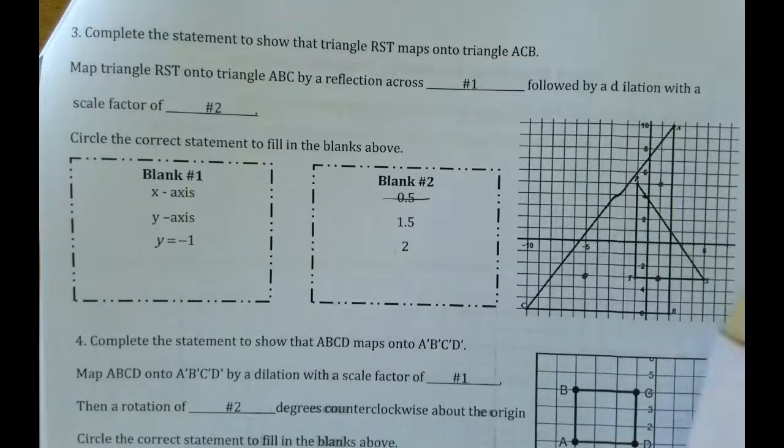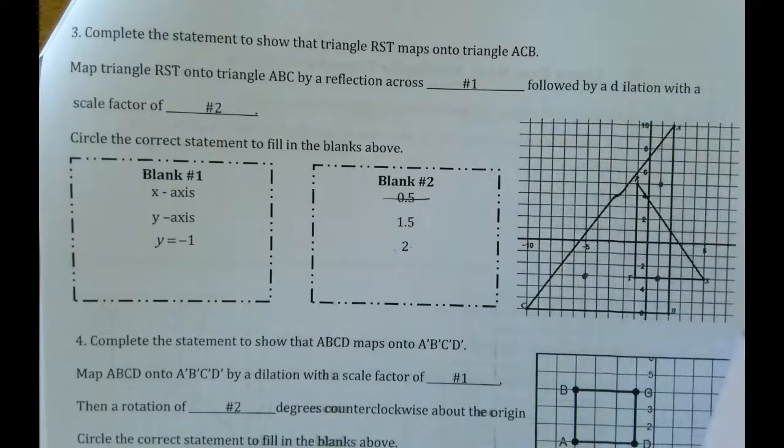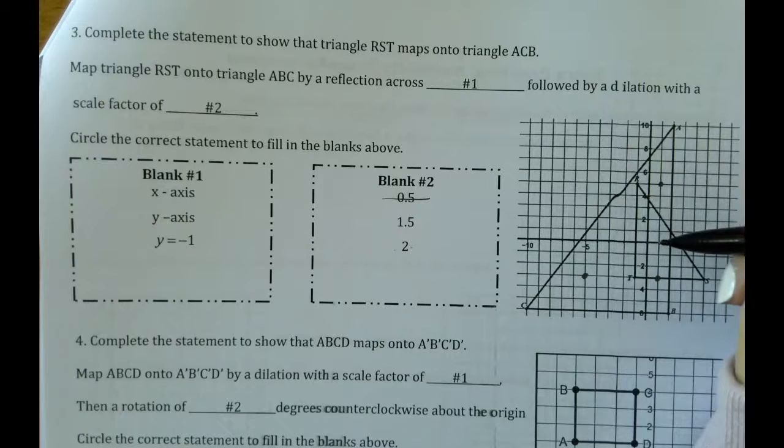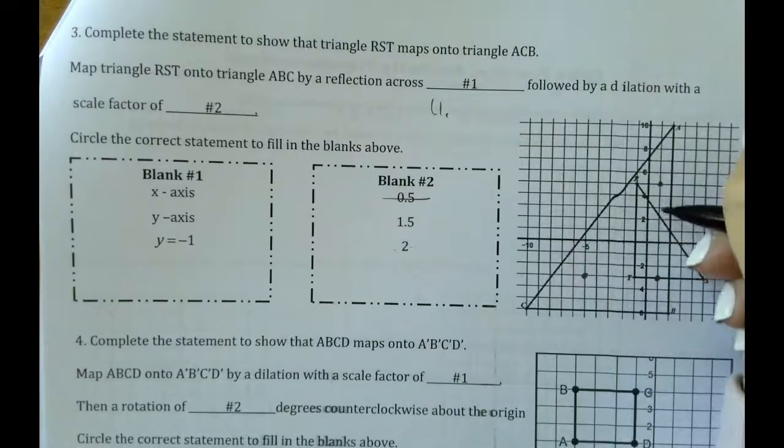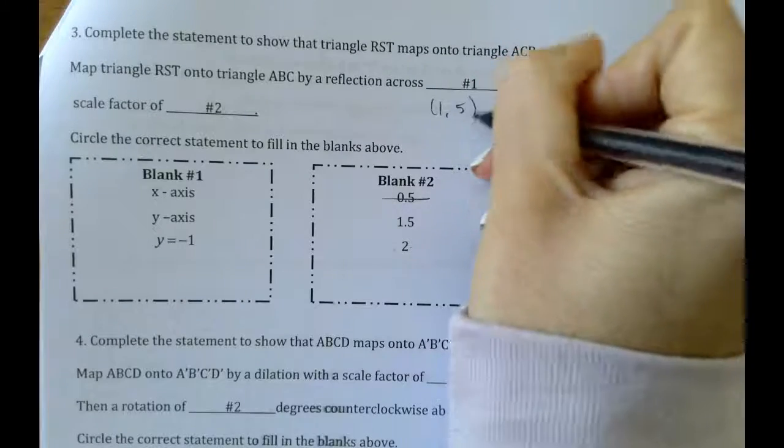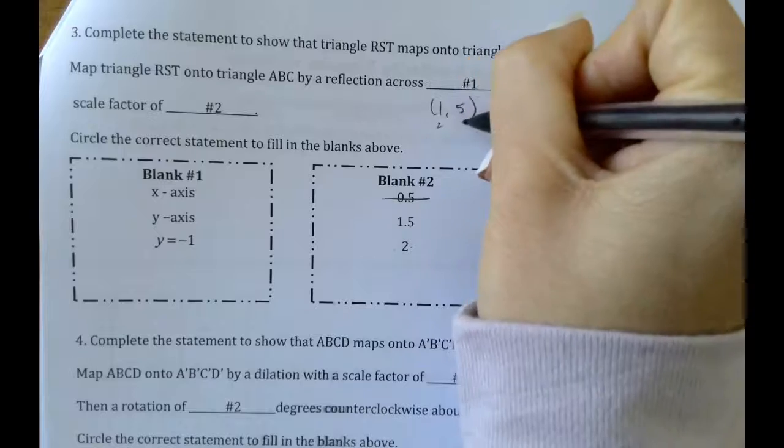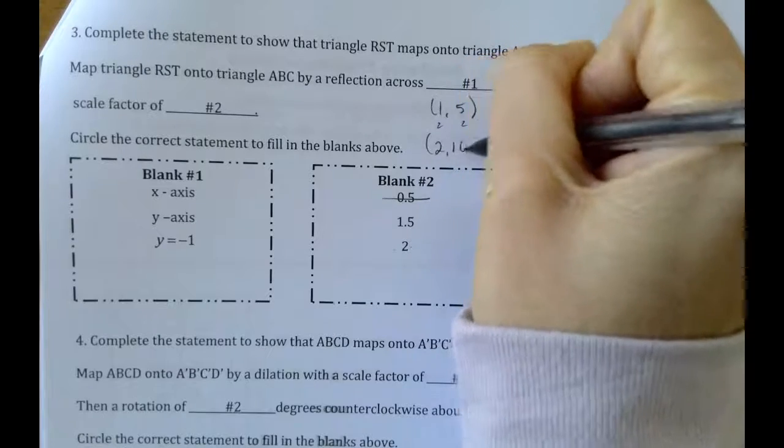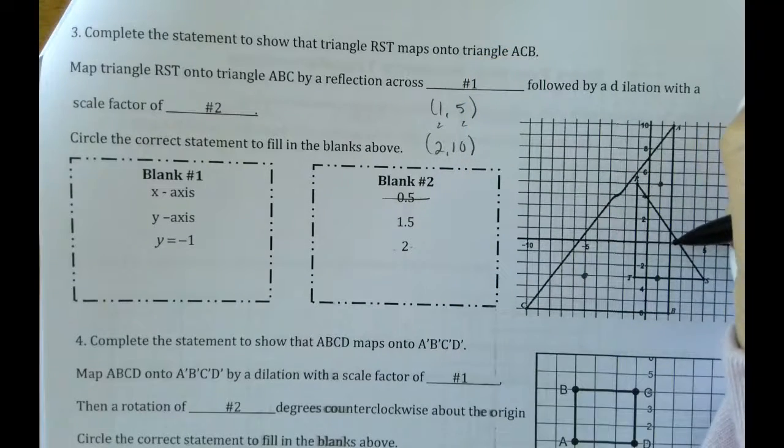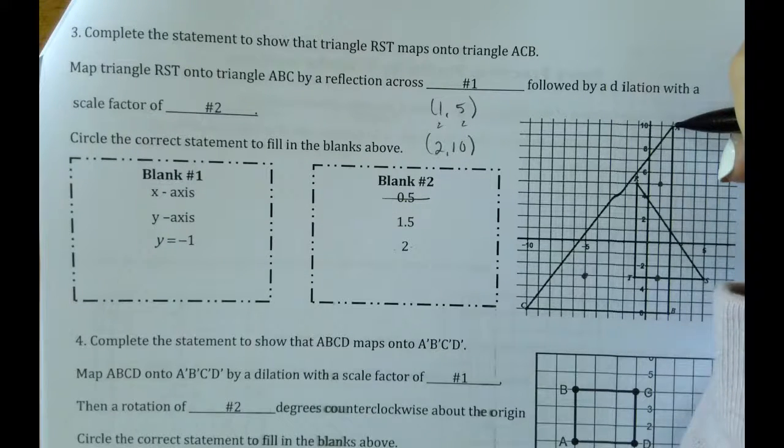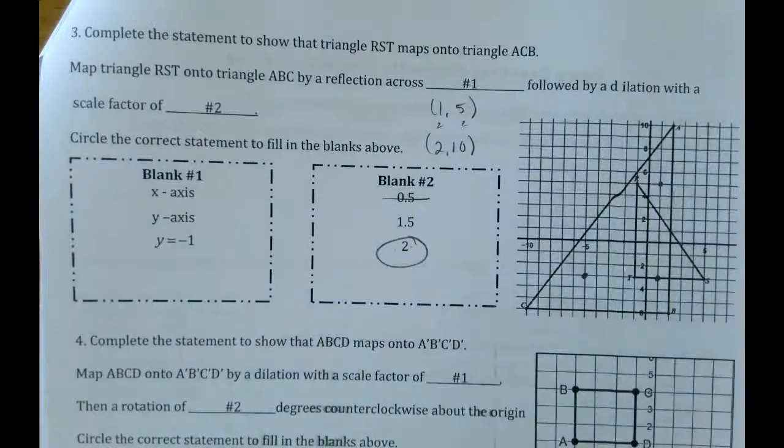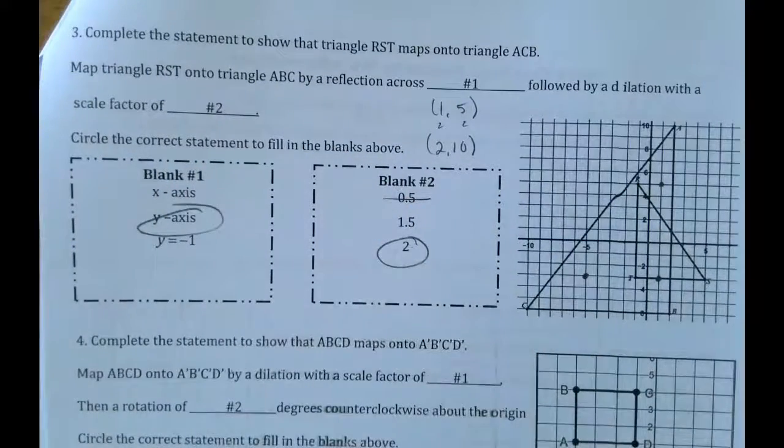So 1.5 is not going to be our answer because we made this bigger. Let's try by 2 and see what happens. So if I'm at the point 1, 5, if I multiply that by 2, I get the point 2, 10. So if I go over to 2 and up to 10, oh, there it is. Look at that. R became A. So we know that we did a dilation of 2 and we flipped that over the y-axis.